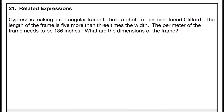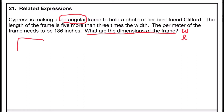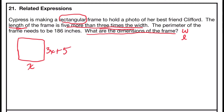Problem number 21 is related expressions. Cypress is making a rectangular frame to hold a photo of her best friend Clifford. The length of the frame is 5 more than 3 times the width, and the perimeter needs to be 186 inches. We want both the width and the length. Since it's a rectangle, I'll draw a picture. I'll call the width x, and express the length as 3x plus 5 — 3 times the width, plus 5.